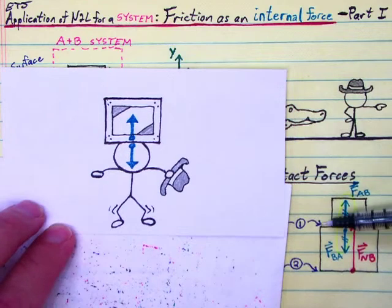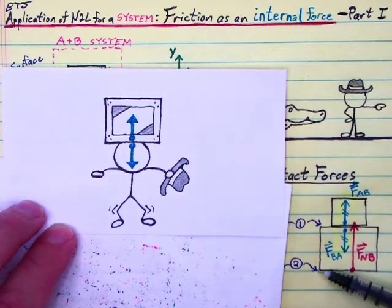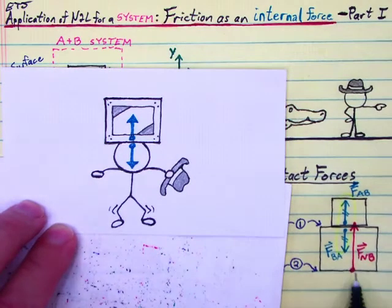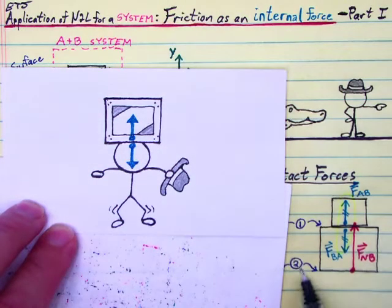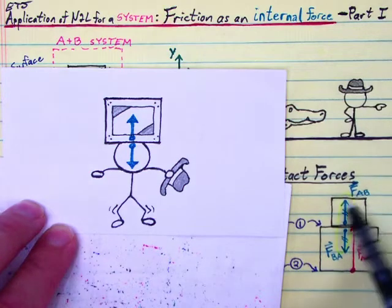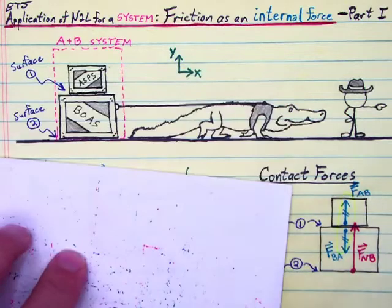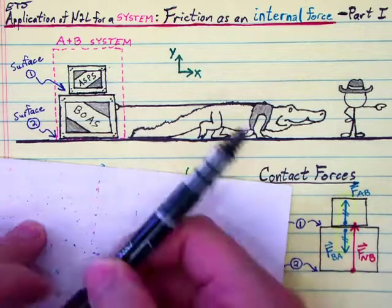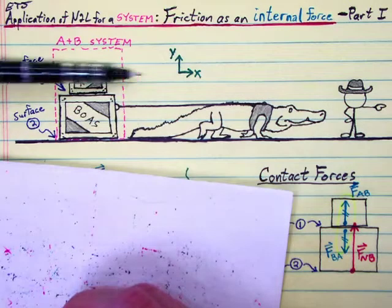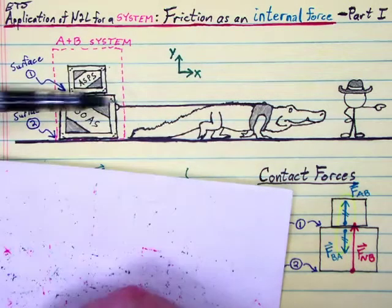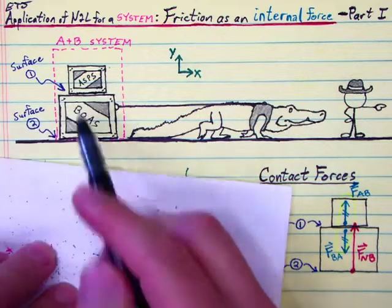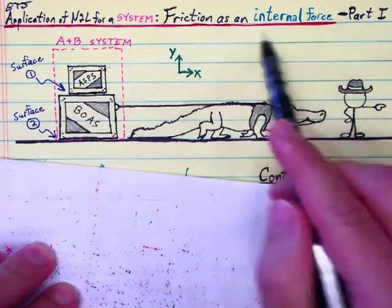So that's what's going on at surface 1. At surface 2 there's the usual normal force from the ground pressing upwards on crate B. Note that the ground is only touching the bottom crate — there's no interaction between the top crate and the ground. Now if the gator is pulling hard enough that the crates are accelerating to the right, there could also be horizontal contact forces between them — friction at this surface — and that's what we're most interested in.